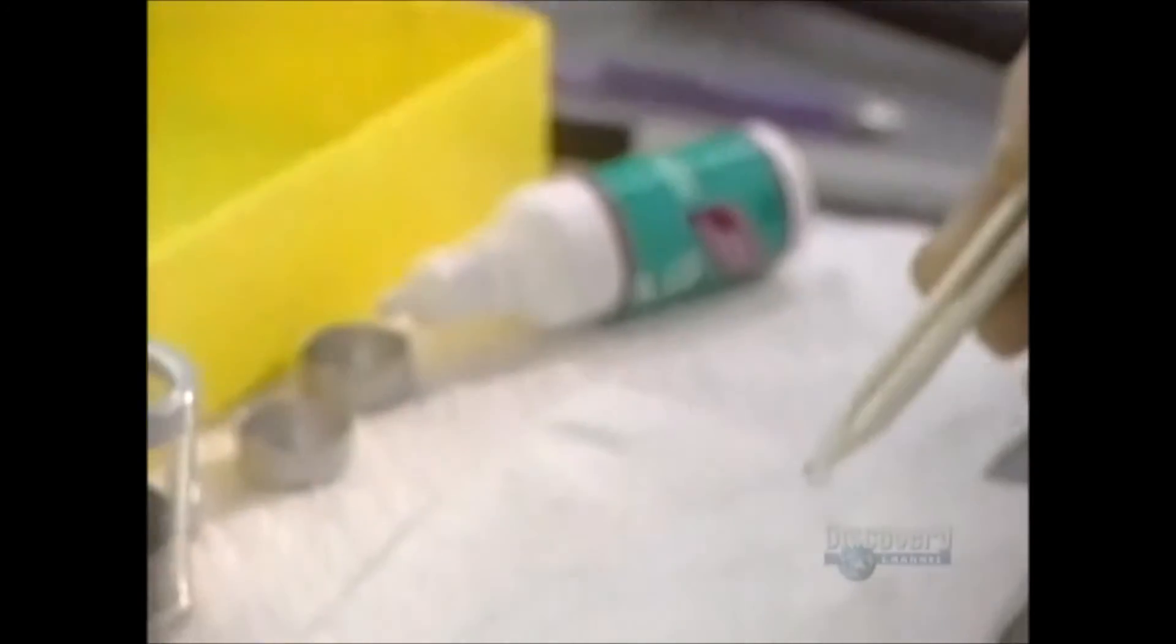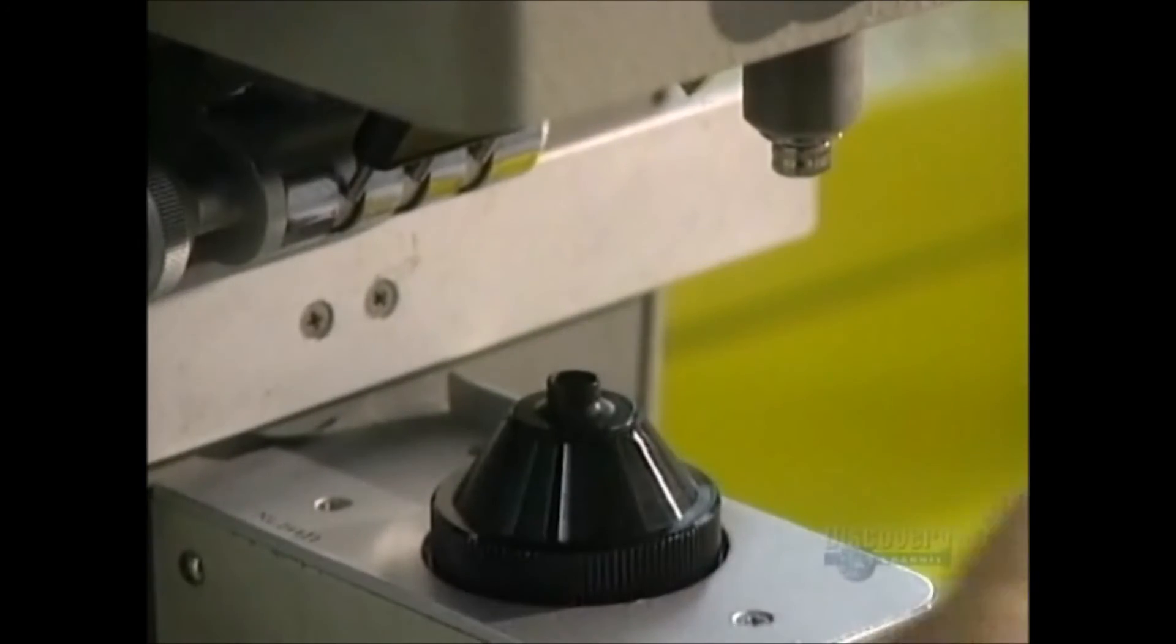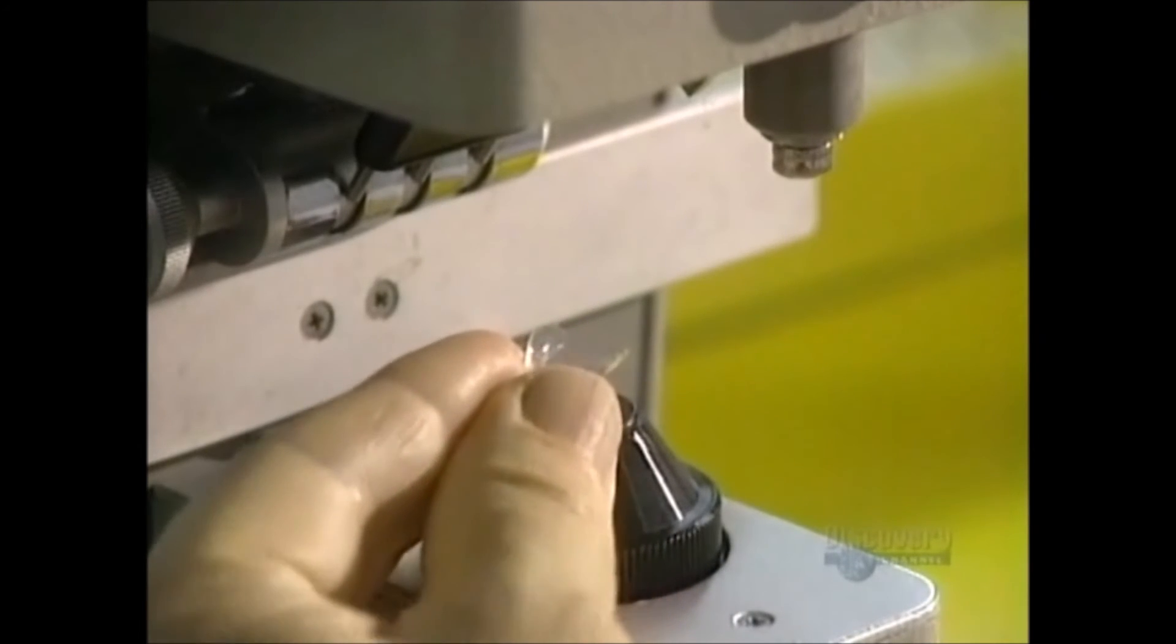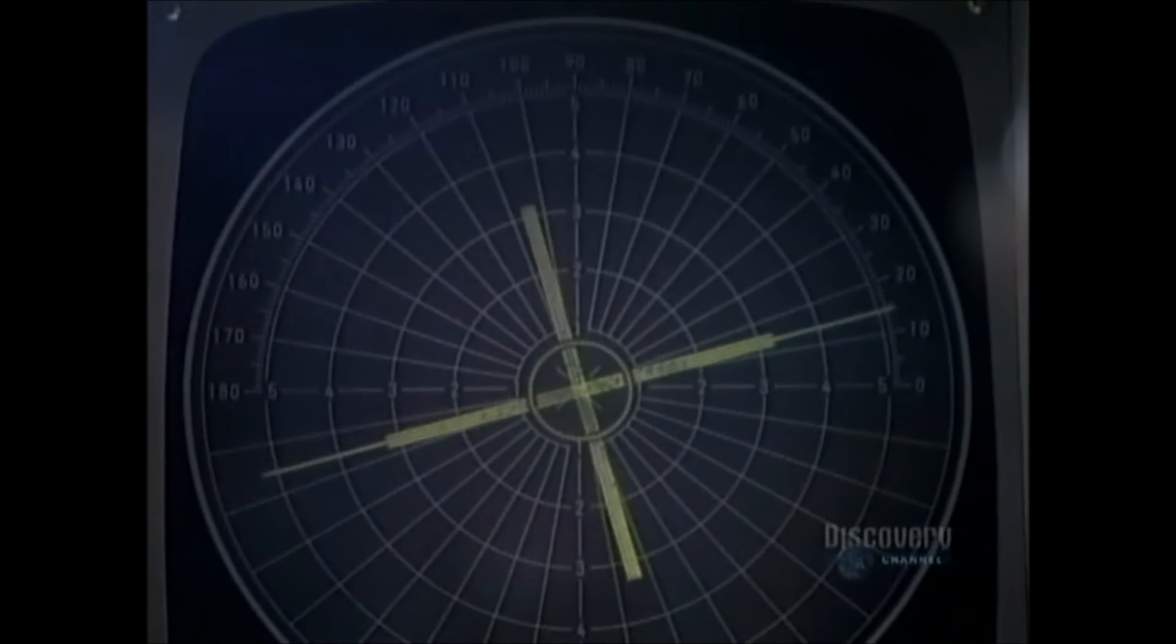And now we proceed with another important testing procedure. The soft, fragile lenses are always handled with the greatest of care. This unit, called a frontofocal meter, is a metering device which verifies the optical precision of the lens.